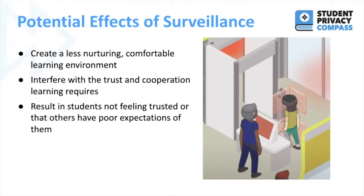One potential effect of surveillance is that it creates an environment that is less nurturing and comfortable to learn in. When students don't feel comfortable or lack trust, they will have a hard time learning. Along the same lines, another possible effect of surveillance is that it can interfere with the trust and cooperation that learning requires. Students need to trust their teachers and peers to some extent so that they can collaborate on group work, engage in discussion, and ask for the help they need. Students can also end up feeling that they're being surveilled because they're not trusted or because others have poor expectations of them.